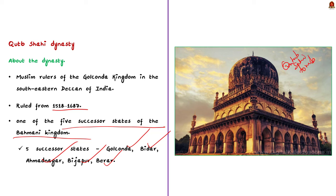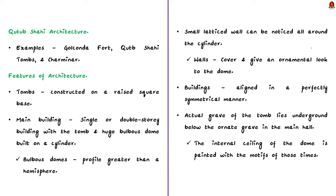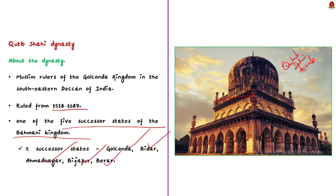Firstly, tombs are constructed on a raised square base. Secondly, the main building mostly consists of a single or double story building with a dome and a huge bulbous dome built on a cylinder — these bulbous domes offer a profile greater than a hemisphere. Thirdly, a small latticed wall can be noticed all around the cylinder, giving an ornamental look to the dome. The buildings are aligned in a perfectly symmetrical manner, a distinct feature of Islamic architecture.